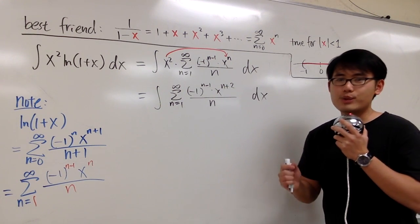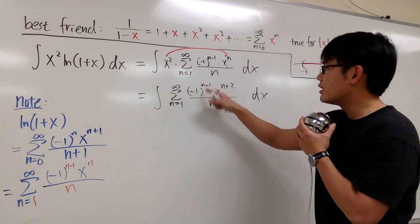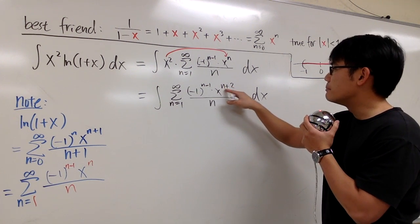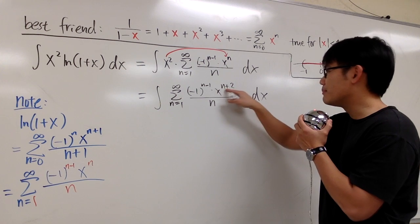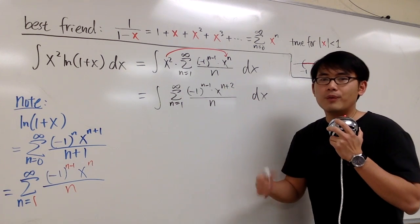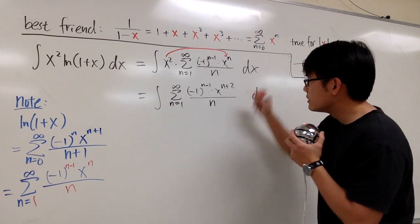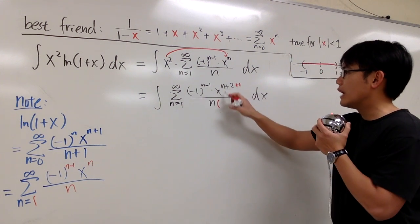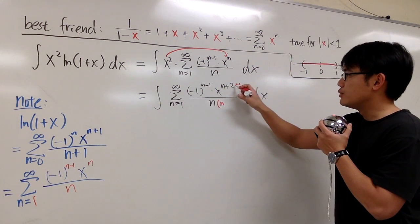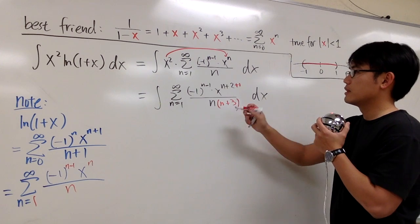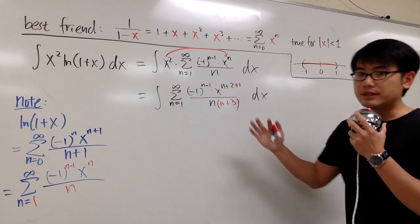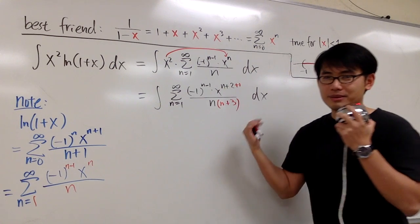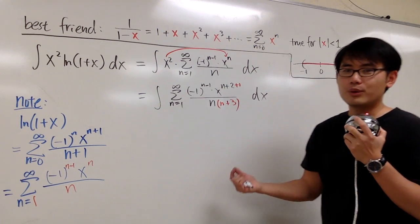And we can finally integrate. This is just the number term, and this is the function part. So we add one to the exponent, and then we divide it by the new exponent, which will have n plus 2 plus 1, which is plus 3. That's the reverse power rule. And you see it's so much easier to integrate power series because it's just integrating polynomials using power rule backwards.